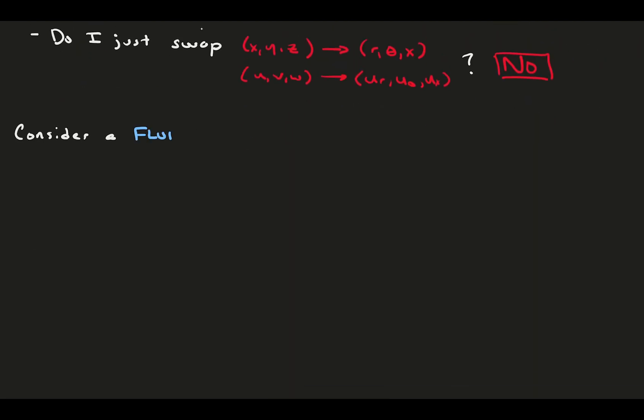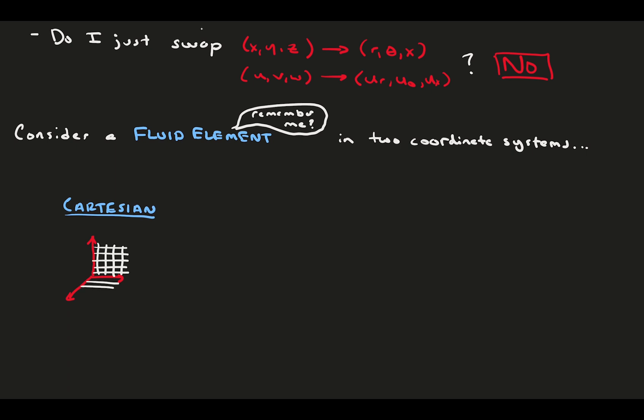To show this, consider a fluid element in two coordinate systems, Cartesian and cylindrical. You might recall we used the fluid element many videos ago deriving the conservation equations. Our fluid element has a shape in three dimensions. In Cartesian, our fluid element is a cube with side lengths of delta x, delta y, and delta z.